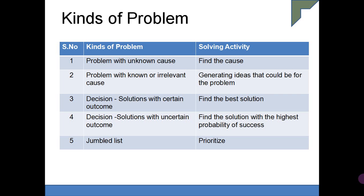Another kind of problem is one that needs to be prioritized. So, kinds of problem: a problem where you don't know the cause — why it is happening — and you need to find a certain cause.